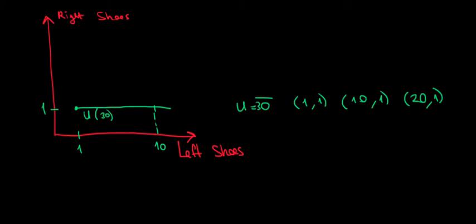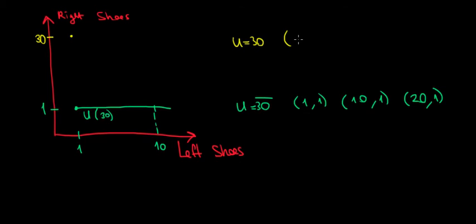Now what if instead of more left shoes, we have more right shoes? If we have one left shoe and 30 right shoes, our utility would still be 30, because we get no additional benefit from those extra right shoes. One left shoe and 30 right shoes gives the same utility as one left shoe and one right shoe. Utility stays constant across the entire range, no matter how many additional right shoes we have.